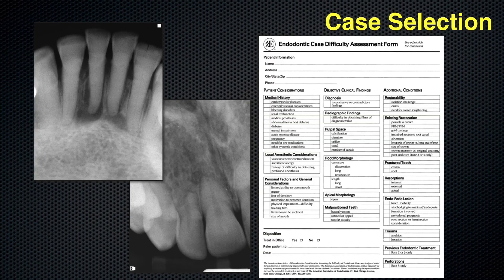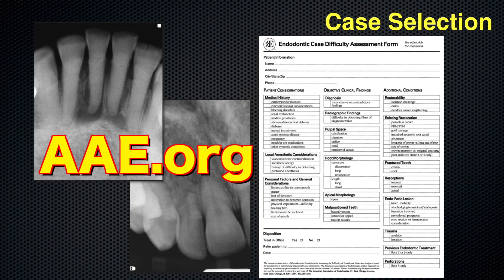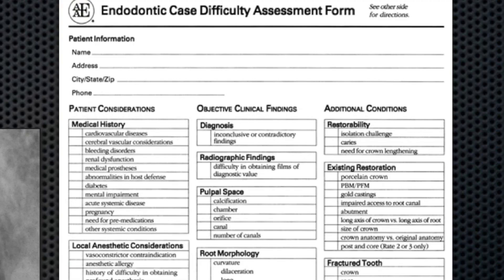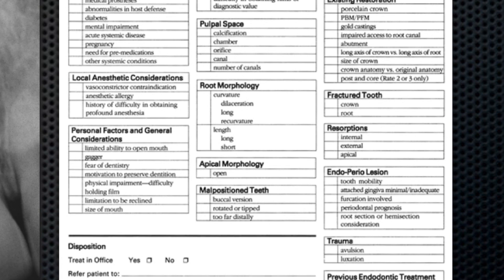One of the greatest things for helping general dentists, particularly young general dentists, is the case difficulty assessment form produced by the AAE. If you go to AAE.org, you can get a copy of the case difficulty assessment form. If you're having problems getting that, just contact Real World Dental and we'll get you a copy. It assigns a number grade to the difficulty of cases — for instance, if the case is a retreatment, if it has an acute angle in the apical third, or if the patient presents difficult management challenges. This is laid out for you and it's a great guide for the general dentist.